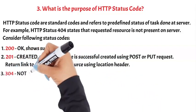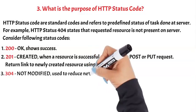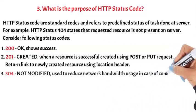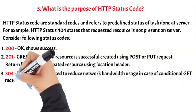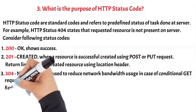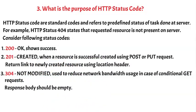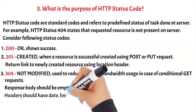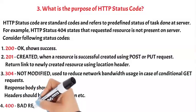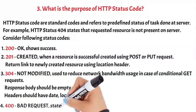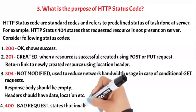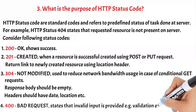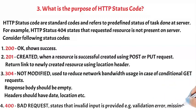3. 304 Not Modified — used to reduce network bandwidth usage in case of conditional GET requests. The response body should be empty; headers should have date, location, etc. 4. 400 Bad Request — states that invalid input is provided, e.g., validation error, missing data.